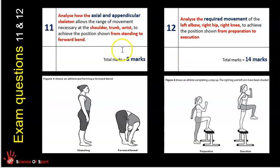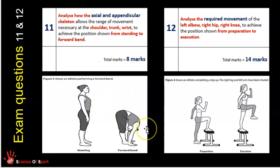Question 11s are always eight mark questions, so they require a reasonable amount of information from you. Notably, the command verb here is analyse — it wants you to look critically at an image, or a scenario, but typically there's an image, and give your outcomes. Question 11 also consistently has axial and appendicular skeleton as part of the question, so question 11s only want you to talk about the skeletal aspect, not muscular.